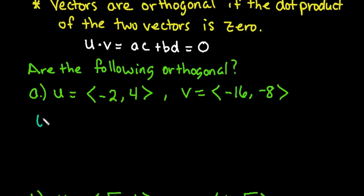So what we want to do is find the dot product of u and v. To do that, I would take -2 times -16 and I'm going to add to that 4 times -8.